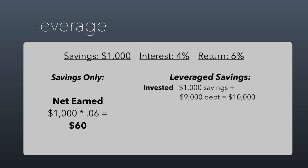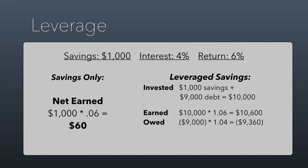You use the $1,000 in savings as collateral and borrow an additional $9,000, so now you have $10,000 to invest. You invest the $10,000 and get $10,600 back, but you owe $9,000 to the bank plus interest, for a total owed of $9,360. When you subtract what you owe from what you got in return, your net return is $240 — much better than the $60 when you invested just your own money. This concept of leverage works because if the cost of borrowing is less than the financial return from the activity, then it makes sense to borrow, though you do have to contemplate the associated risks.